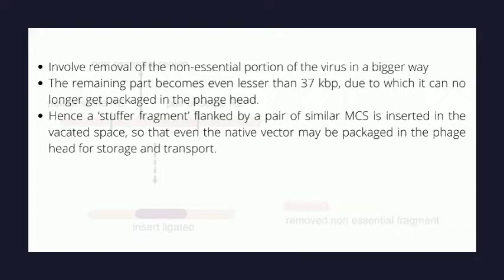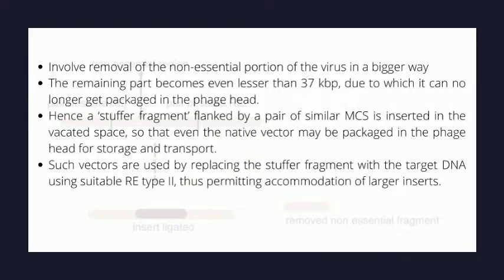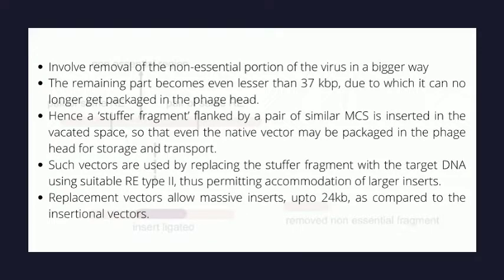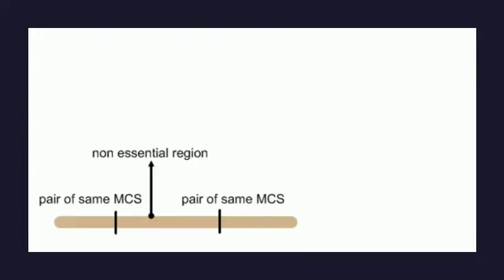Such vectors are used by replacing the stuffer fragment with the target DNA using suitable type II restriction enzymes, thus permitting accommodation of larger inserts. Replacement vectors allow massive inserts of size up to 24 kbp, as compared to insertion vectors.